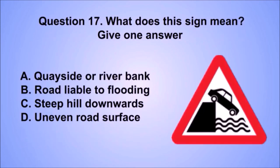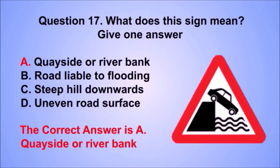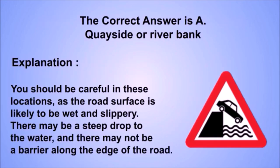Question 17. What does this sign mean? The correct answer is A: Quayside or river bank. You should be careful in these locations, as the road surface is likely to be wet and slippery. There may be a steep drop to the water, and there may not be a barrier along the edge of the road.